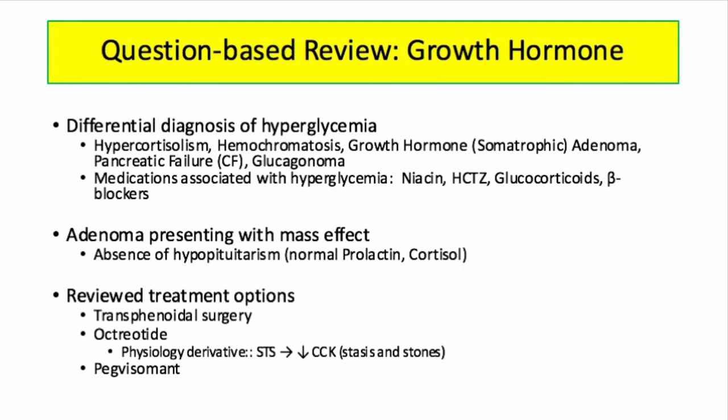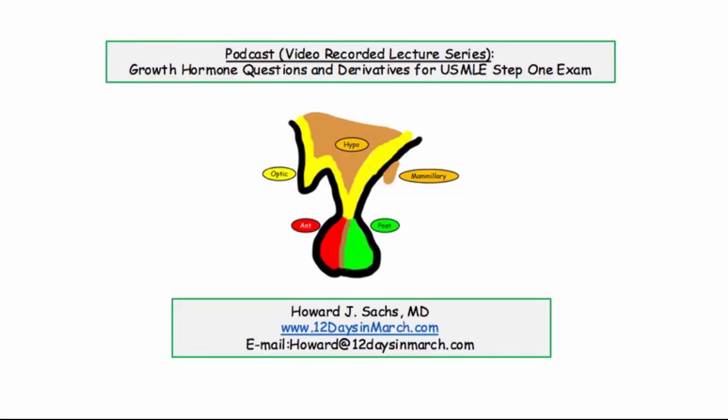In this question-based review, we covered a lot of territory: secondary causes of hyperglycemia including endocrinopathies, hemochromatosis, and pancreatic failure; key medications identified by their adverse effect of hyperglycemia; growth hormone adenomas presenting with hyperglycemia and mass effect; and key therapies including surgery and two hormonal therapies. Growth hormone can certainly swing in a number of directions. That concludes this question-based review of growth hormone and related derivatives. Thank you.